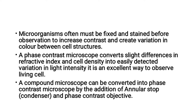A phase contrast microscope converts slight differences in refractive index and cell density into easily detected variation in light intensity. It is an excellent way to observe living cells. A compound microscope can be converted into a phase contrast microscope by the addition of an annular stop.